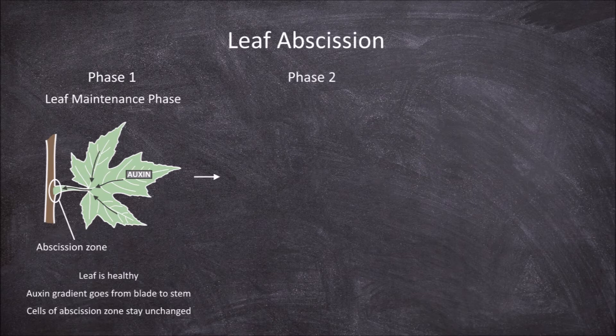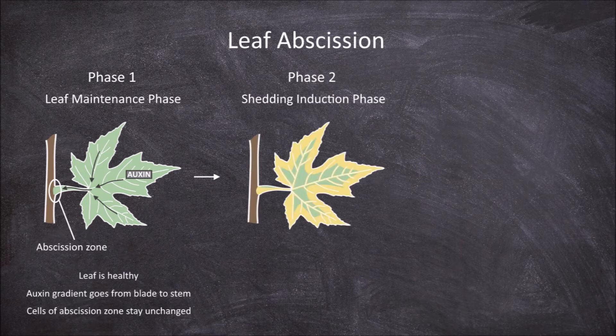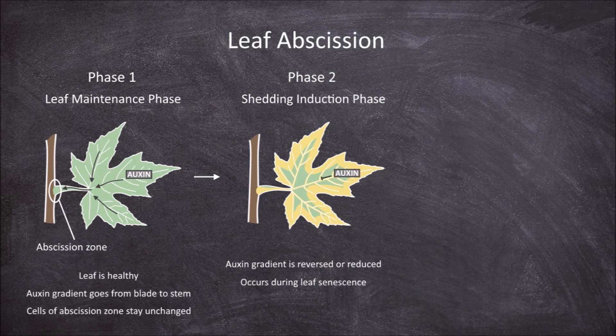The second phase is the shedding induction phase. In this phase the auxin gradient that normally goes from the blade of the leaf to the stem is either reversed or reduced. This normally occurs during leaf senescence — when the leaf is aging. Autumn or fall is a time when leaves of many plants go through senescence, indicated by the changing colours of the leaf before they fall off.